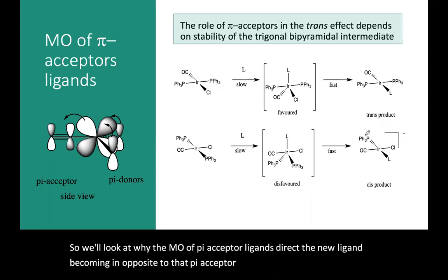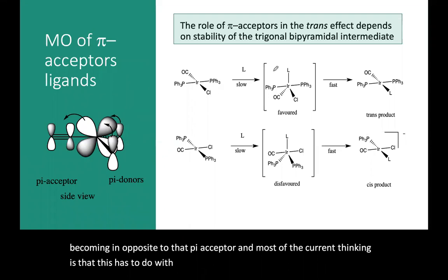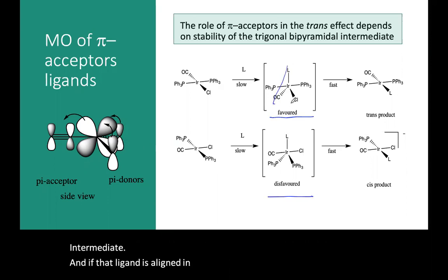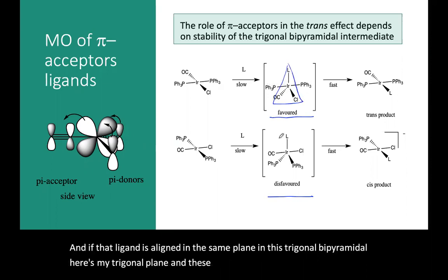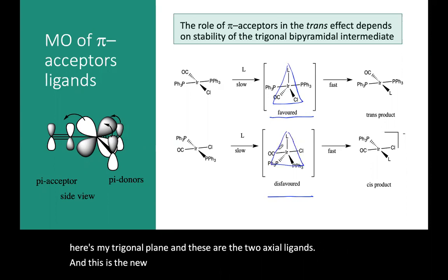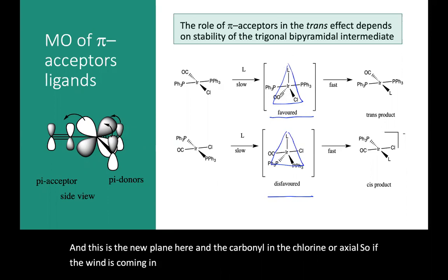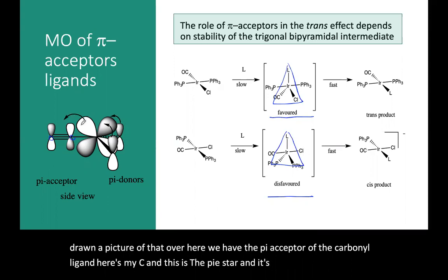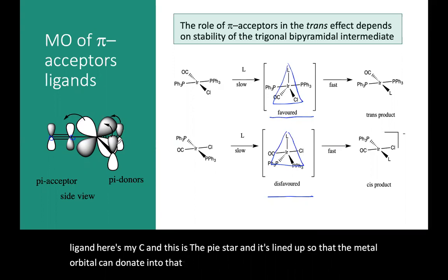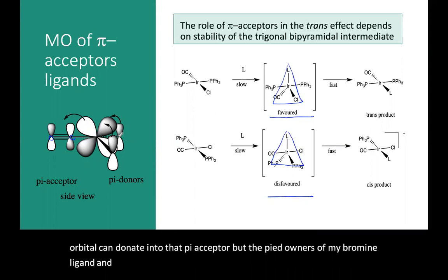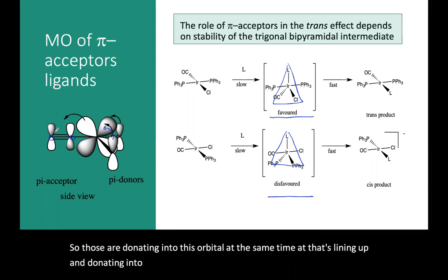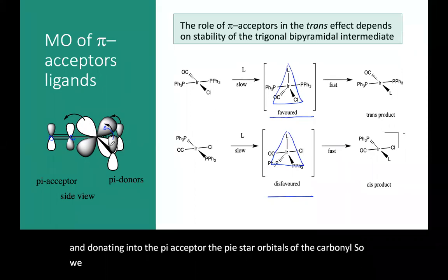Most of the current thinking is that this has to do with the stability of the trigonal bipyramidal intermediate. If that ligand is aligned in the same plane in this trigonal bipyramidal — here's the trigonal plane, with two axial ligands, and the carbonyl and chlorine are axial — then the pi star of the carbonyl lines up so that the metal orbital can donate into that pi acceptor. The pi donors of the bromine and chlorine ligands are also lined up, donating into this orbital at the same time. So we have an extended pi system all in one plane.